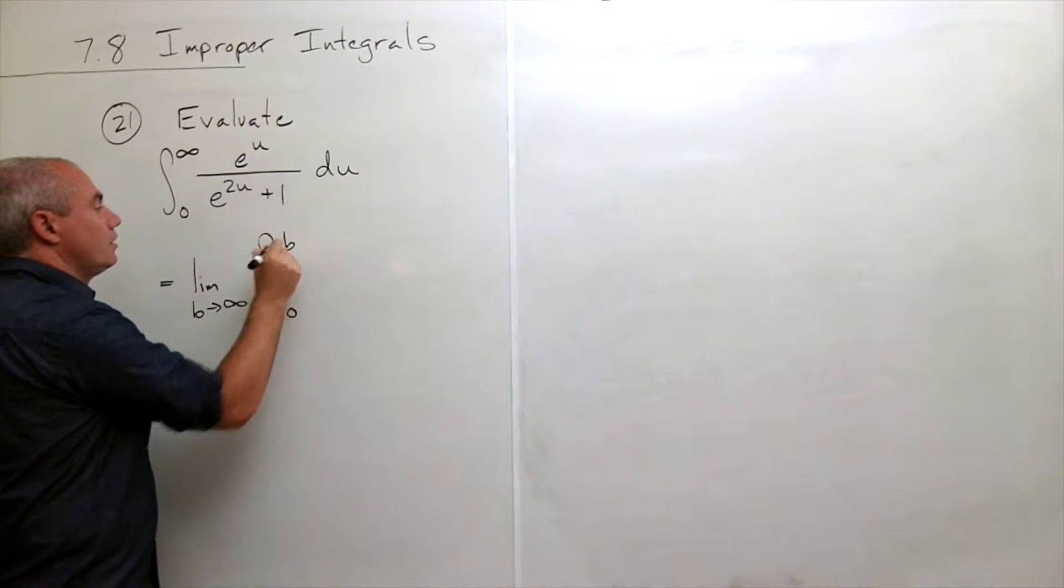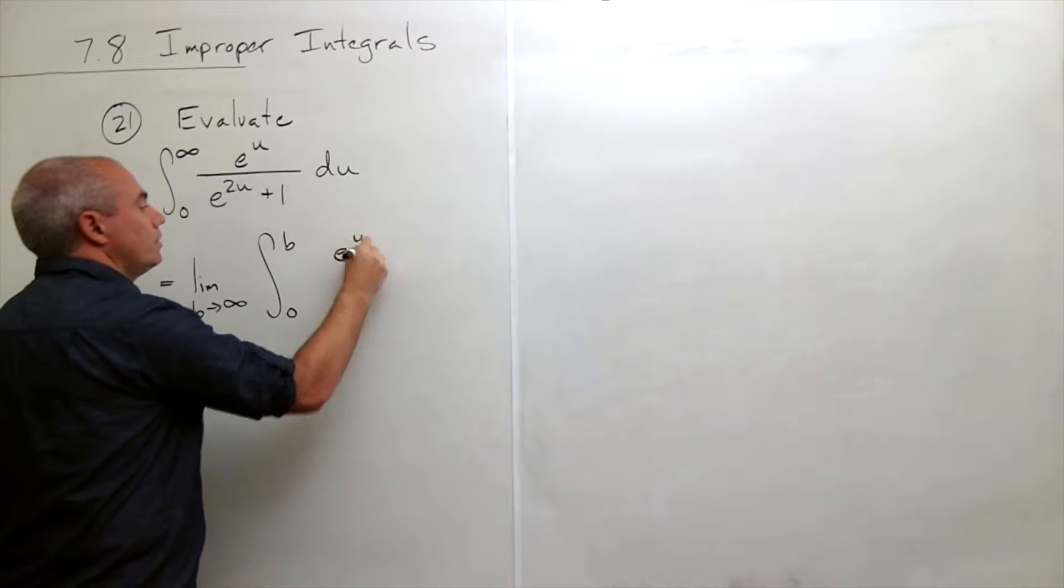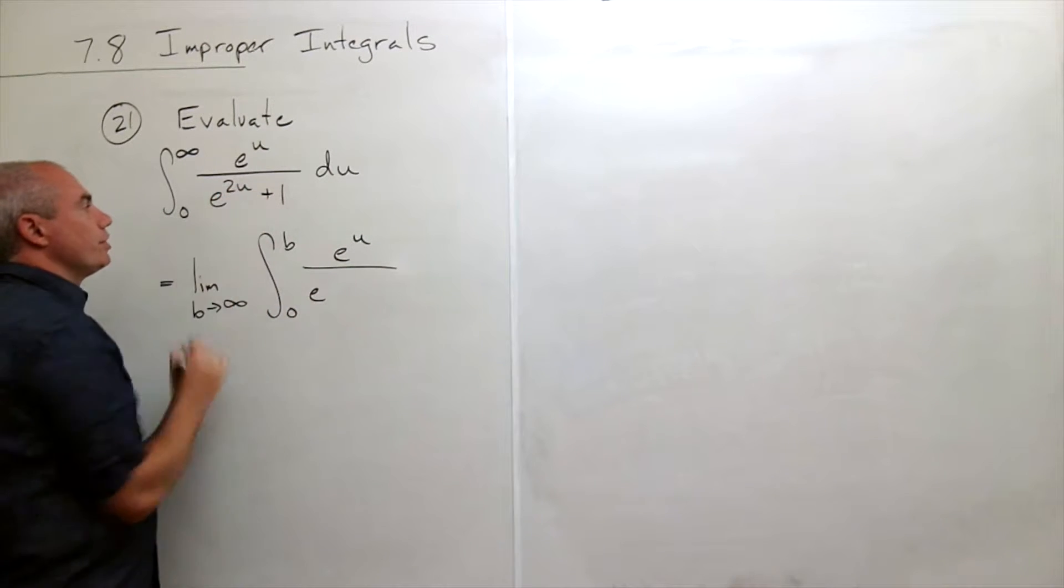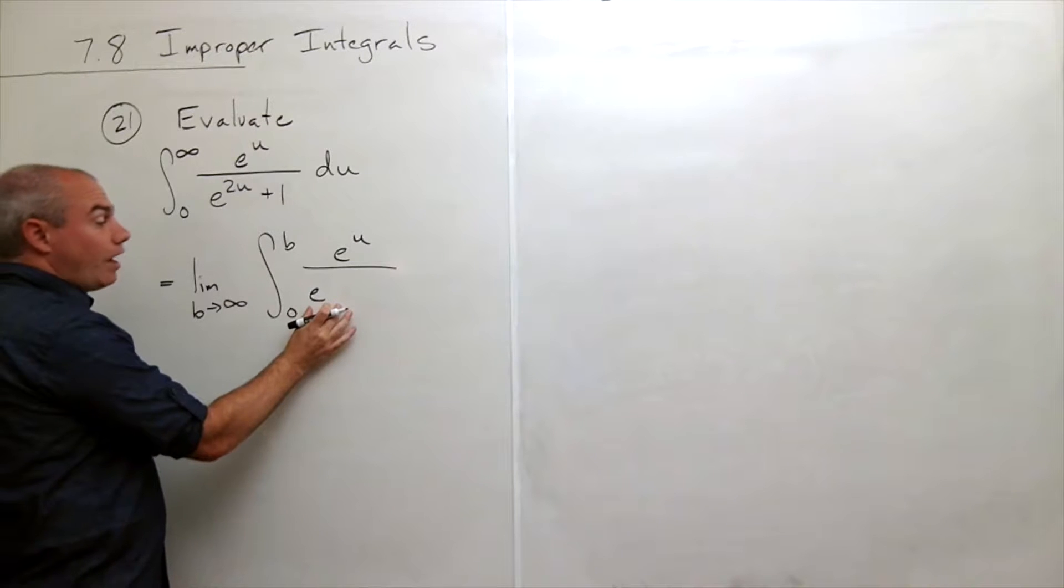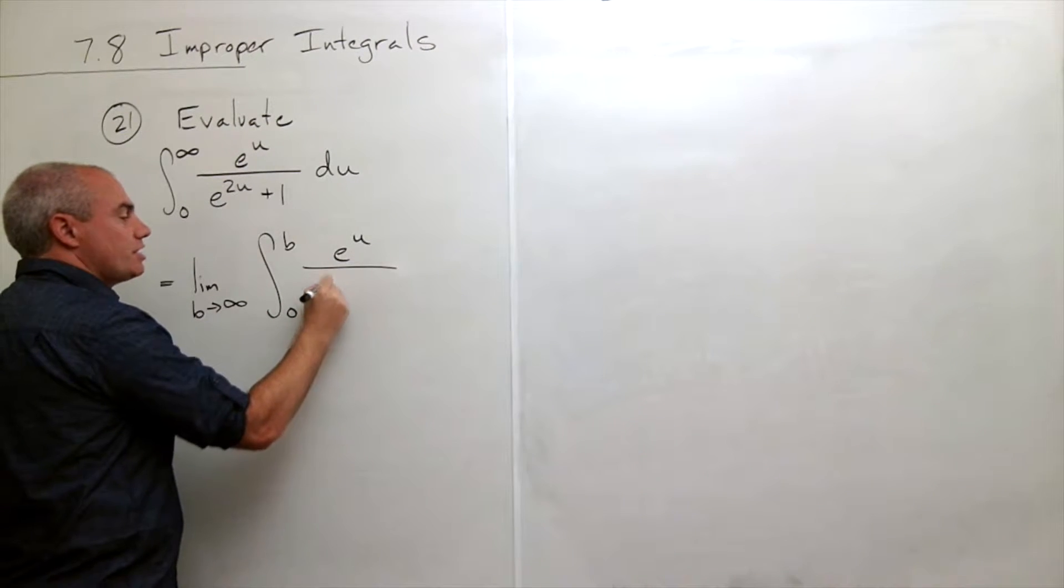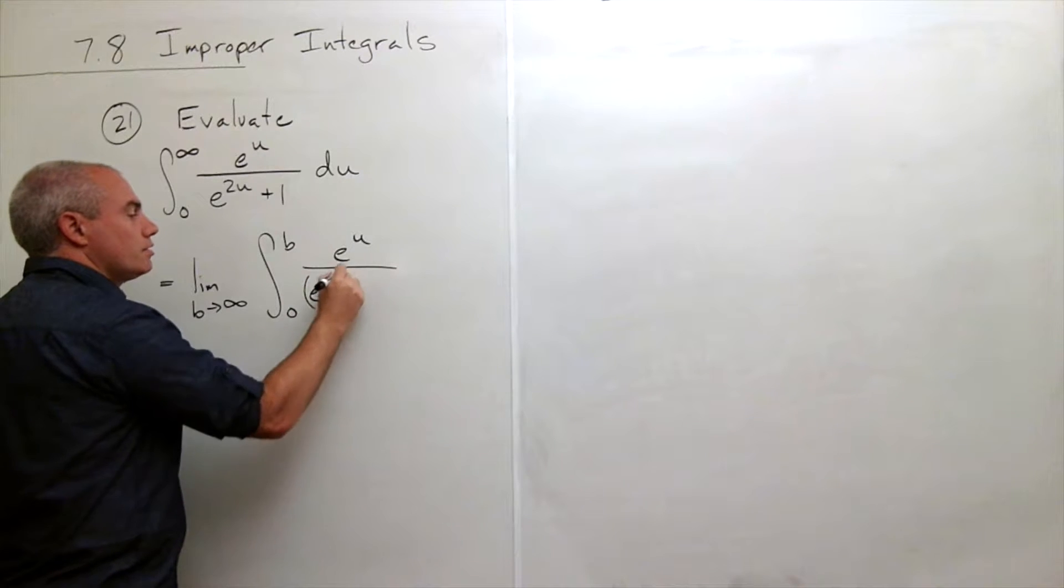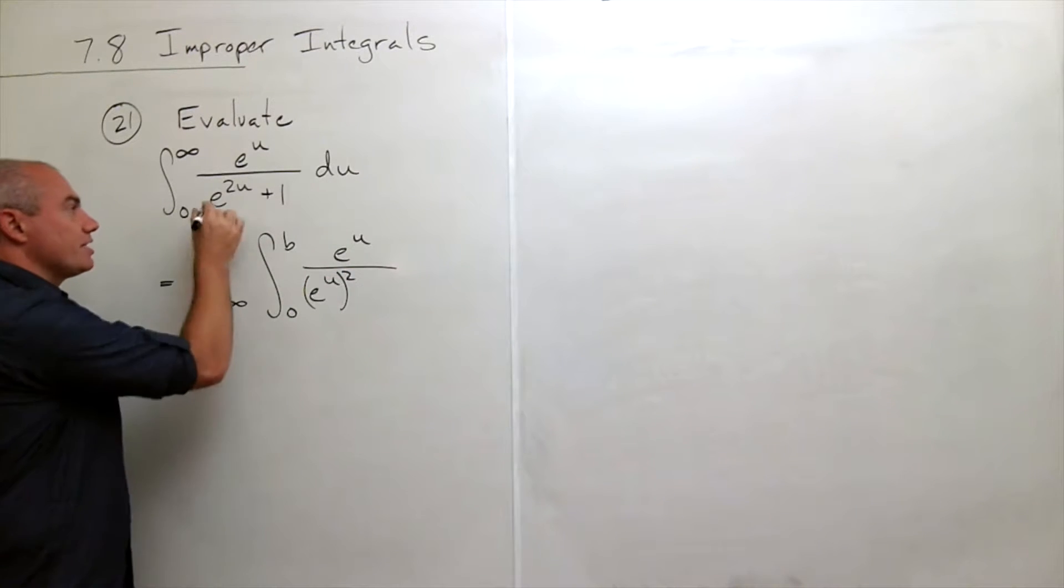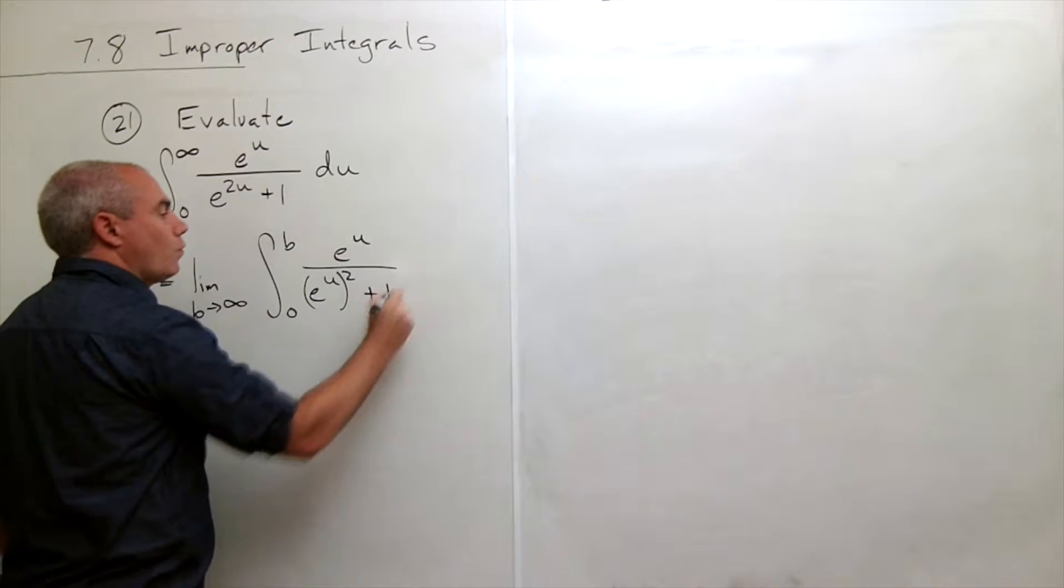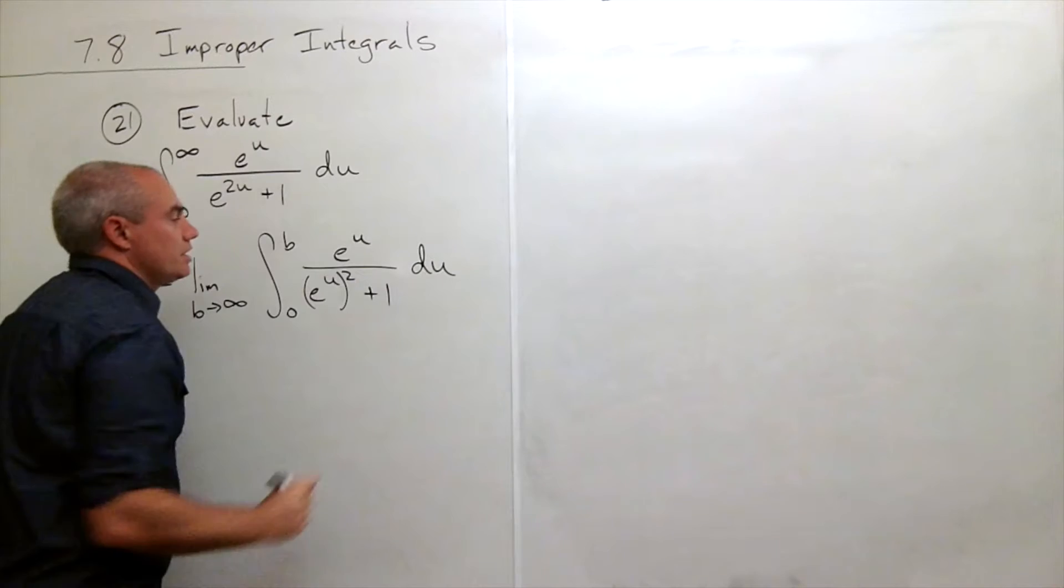Now something that's going to be helpful to me, I'm going to write it this way to help us think about it: this is just e to the u squared. That's the same thing as e to the 2u, but I want to write it this way, e to the u squared plus 1 du.